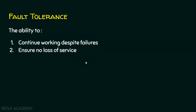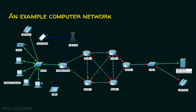Let us see an example for fault tolerance. Assume that these two entities are communicating with each other — this computer and this web server — through a switch, this wireless router, this link, router 1, router 3, router 5, a switch, and the web server.